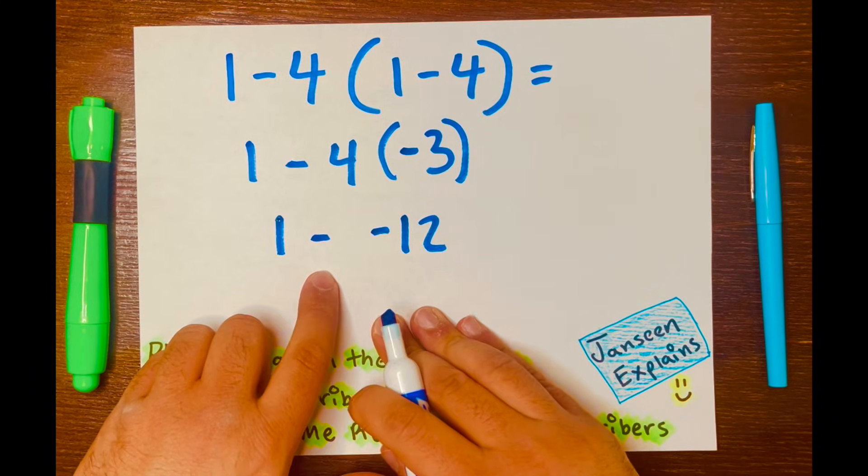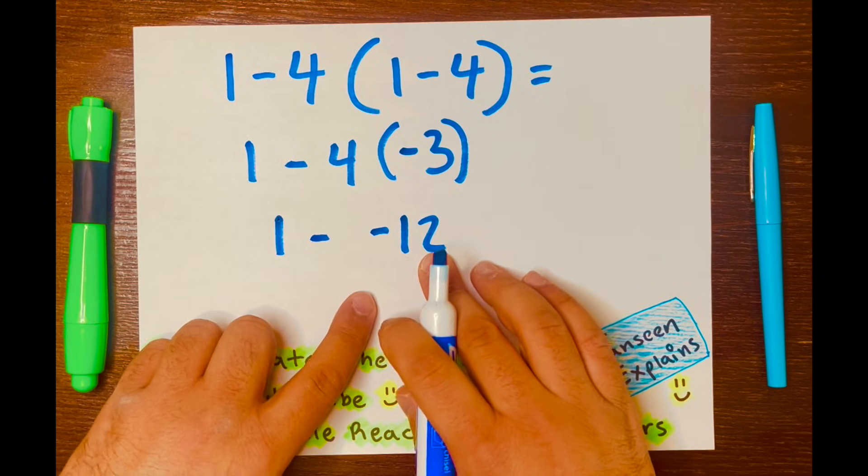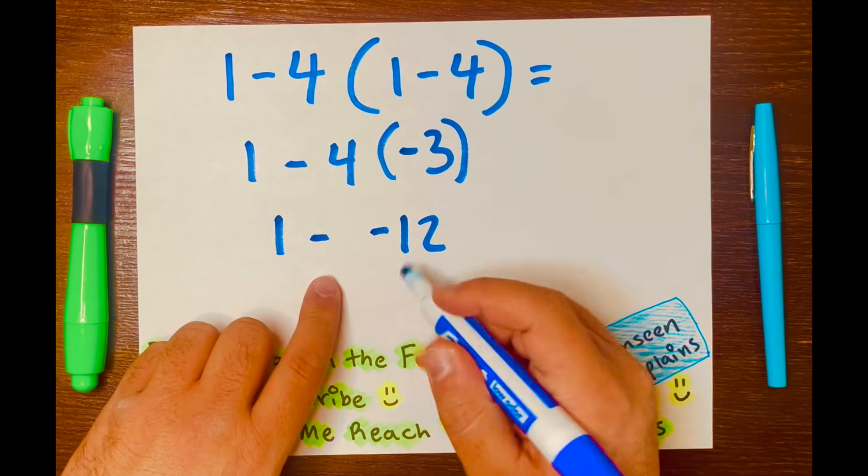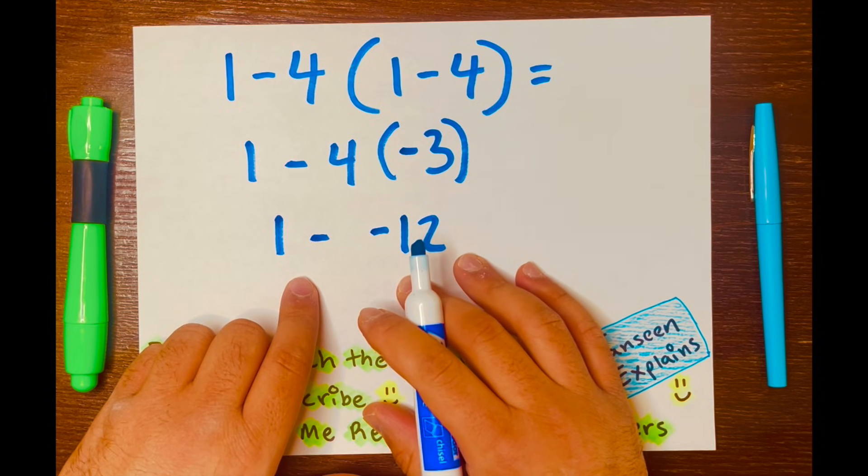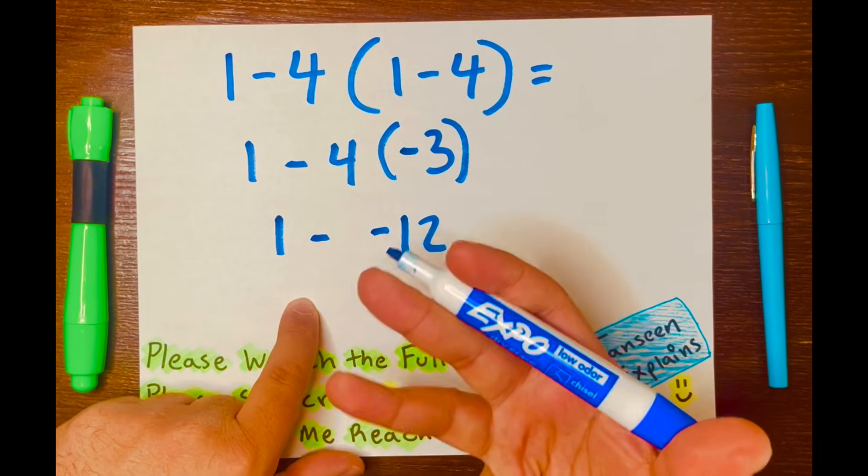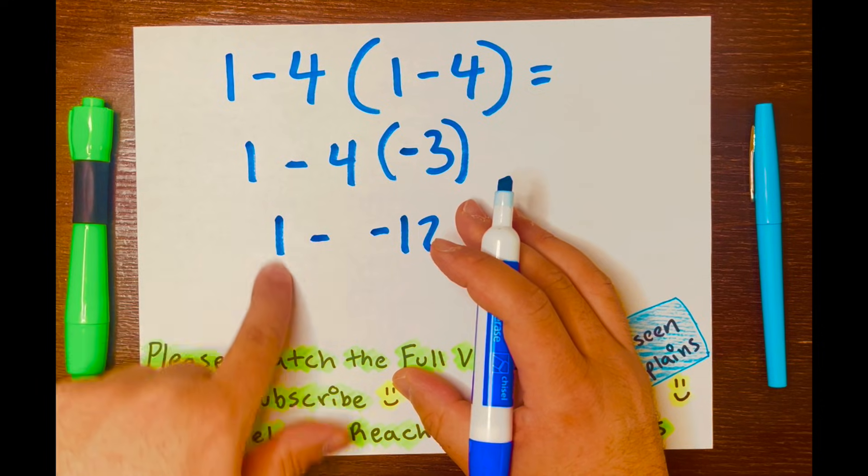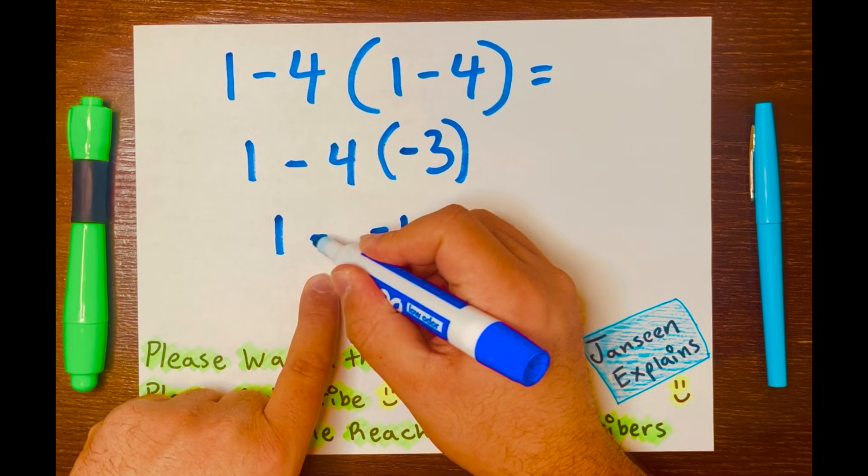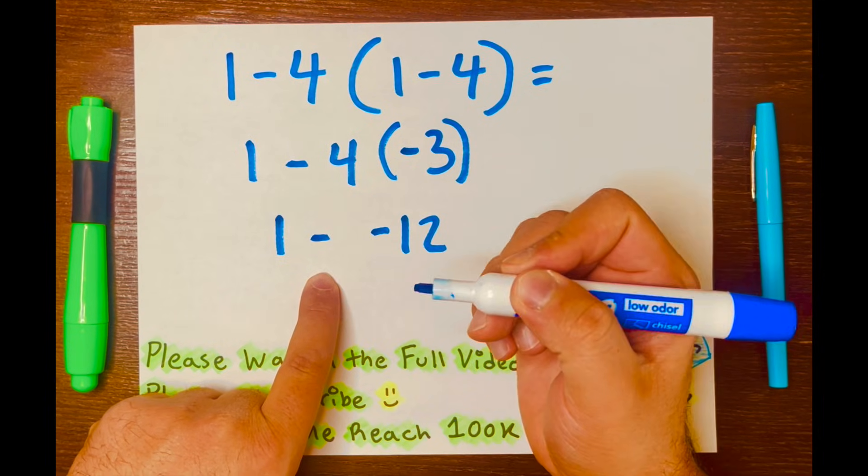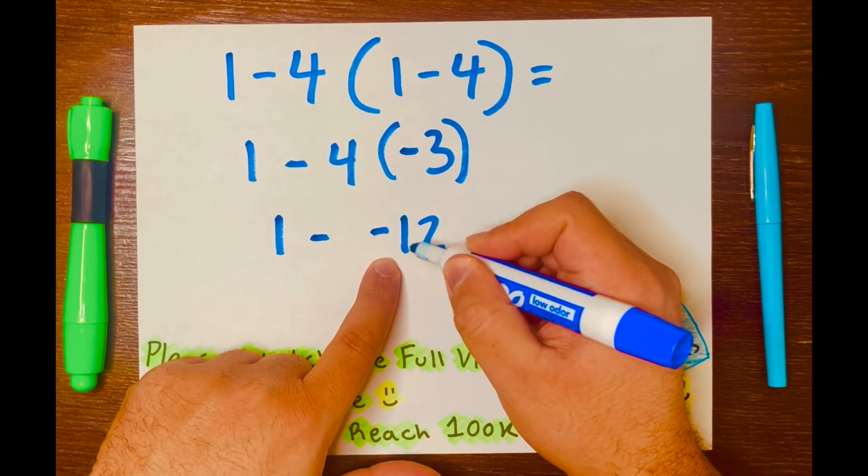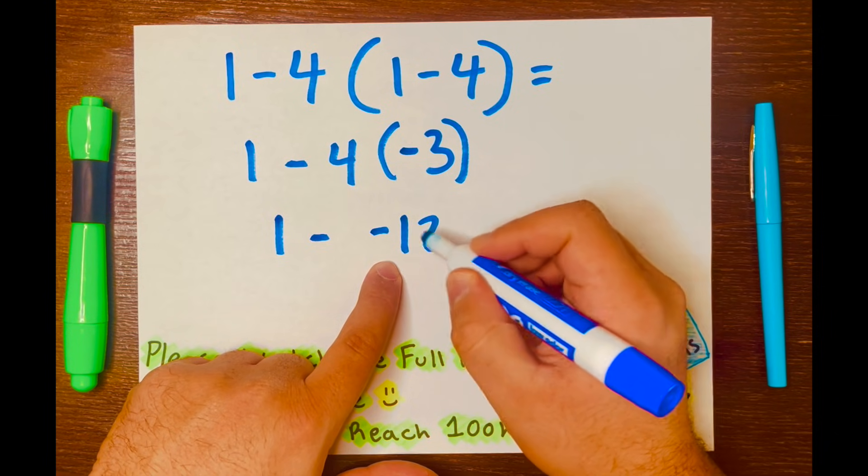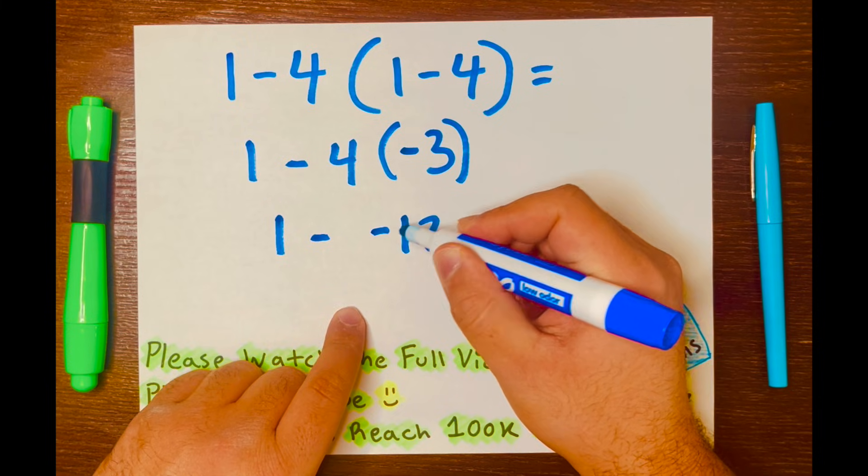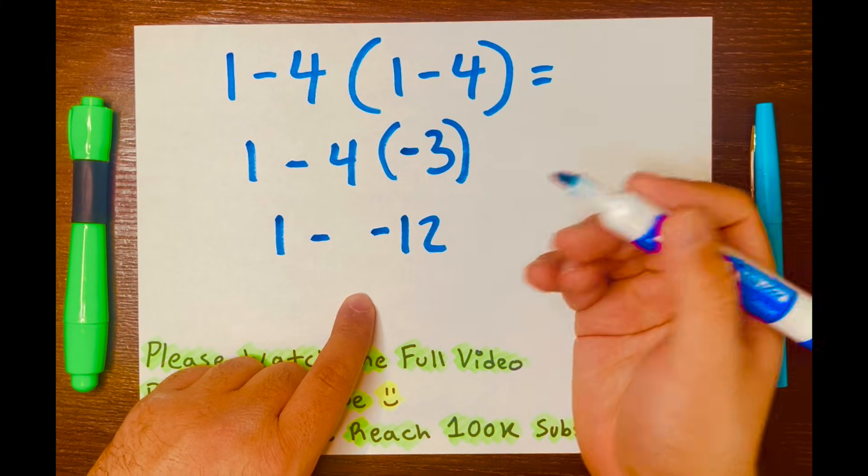Now you have 1 minus negative 12. When you are subtracting integers, you can use a rule called keep, change, change, where you keep the first number, so you don't change the first number. You change the subtraction to addition, and then you change the second number to its opposite. So negative 12 will change to a positive 12.